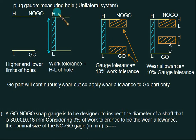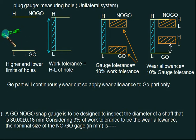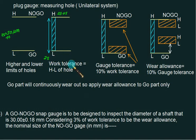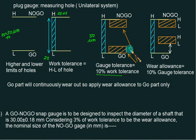For plug gauges, first consider the higher hole limit and lower hole limit. L stands for lower limit, H stands for higher limit. This tolerance is called work tolerance or hole tolerance. Say this tolerance equals 50 micron and basic size is 25 mm, so the permissible range is 25 to 25.05 mm — maximum size 25.05, minimum size 25. Hole tolerance is 50 micron. Gauge tolerance is taken as 10% of work tolerance, so 10% of 50 micron is 5 micron for the GO side and 5 micron for the NO GO side.